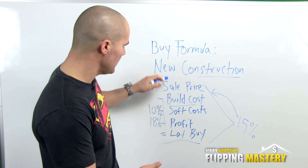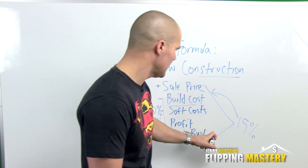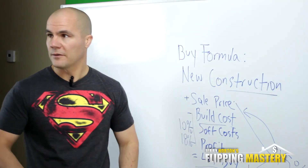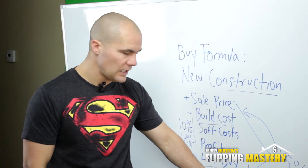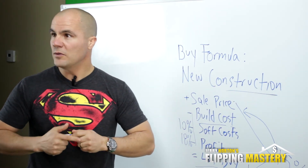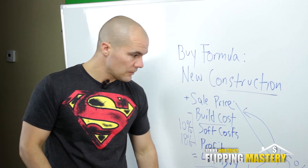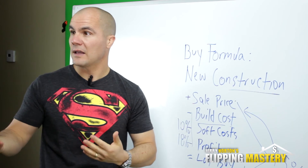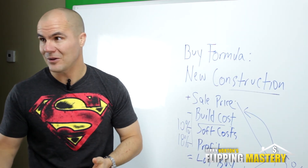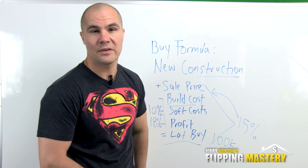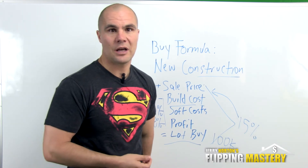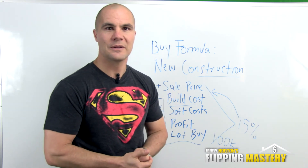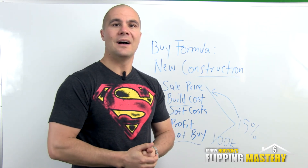This formula is also useful for wholesalers. Say you run the formula and find your lot buy is $100,000 for a deal to work. If you can pick that lot up for $80,000 or $90,000, you've got a good deal you can wholesale. Wholesaling lots is often a lot easier than wholesaling houses, so if you haven't considered it, be sure to check out my lot flipping program where I go into great detail about new construction deals and how to get finders fees for bringing deals.